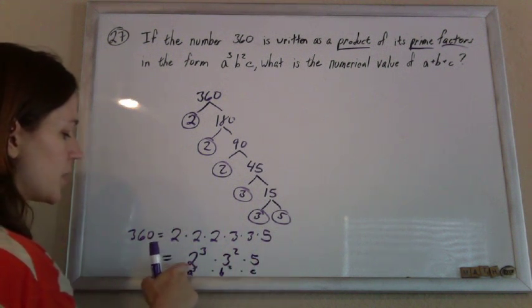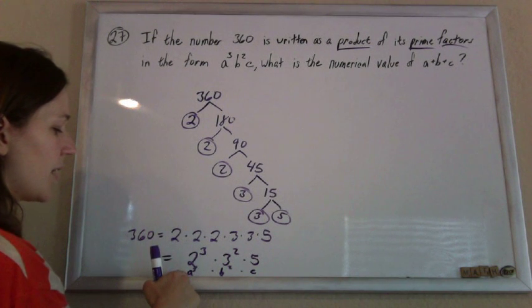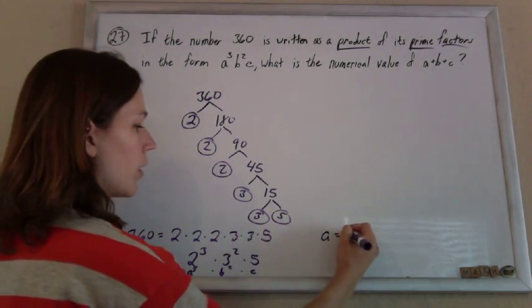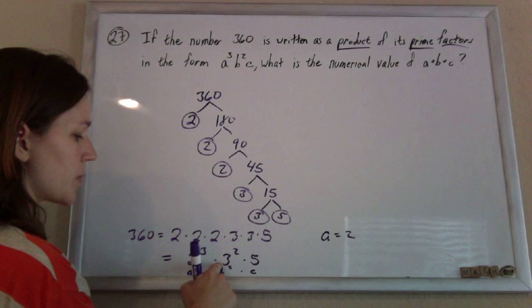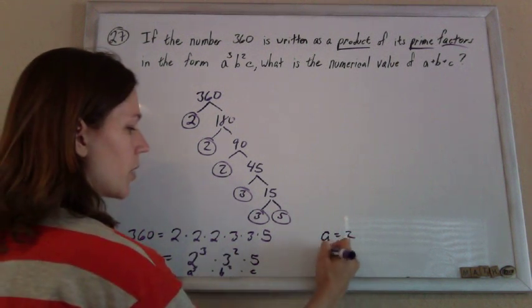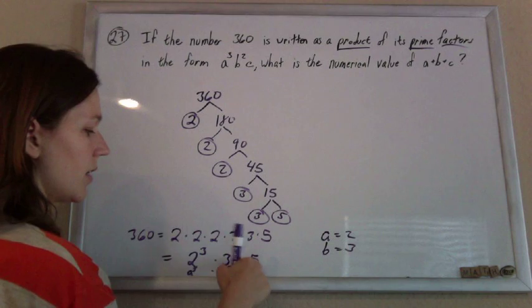Now if I match this up to a cubed times b squared times c, if a cubed is supposed to be 2 cubed, then a must equal 2. If b squared is supposed to be 3 squared, then b must equal 3. And c is 5.